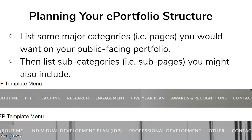When planning your ePortfolio structure, list some major categories you will want on your public-facing portfolio, and then list sub-categories. The major categories will appear in your main navigation, and if it's a drop-down menu, those items would be your sub-categories.